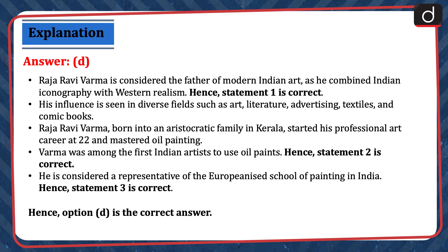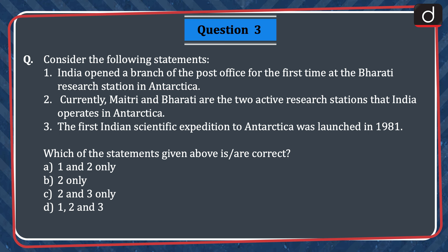Raja Ravi Verma is considered the father of modern Indian art as he combined Indian iconography with Western realism. Hence, statement 1 is correct. His influence is seen in diverse fields such as art, literature, advertising, textiles, and comic books. Raja Ravi Verma, born into an aristocratic family in Kerala, started his professional art career at 22 and mastered oil painting. He was among the first Indian artists to use oil paints. Hence, statement 2 is correct. He is considered a representative of the Europeanized School of Painting in India. Hence, statement 3 is correct, and option D is the correct answer.